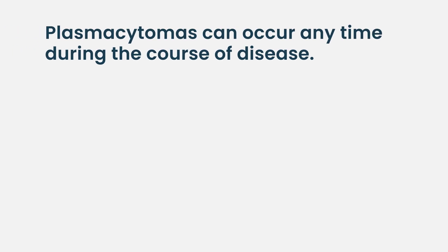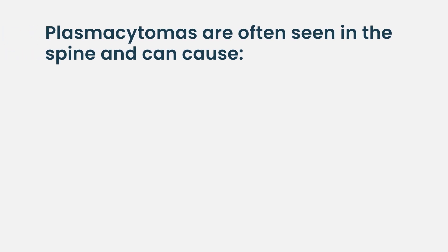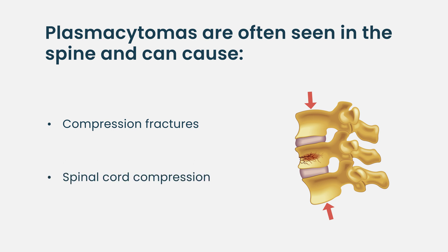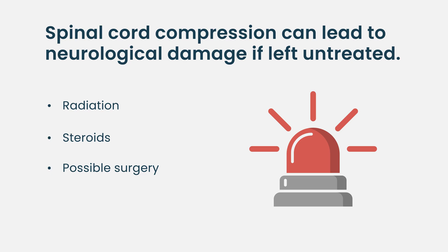Plasmacytomas can be discovered at any point along a patient's journey with myeloma. Sometimes they pop up unexpectedly — even when the monoclonal protein is very low, like 0.1, and a new pain leads to a scan that reveals a plasmacytoma. We often see them in the spine causing compression fractures, and sometimes they press on the spinal cord, which is an oncologic emergency. We treat that with radiation, steroids, and sometimes surgery to prevent neurologic injury, because without timely treatment, patients can become paralyzed.